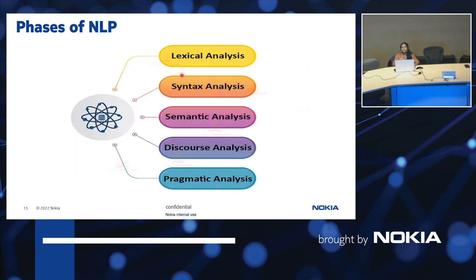There are five phases of NLP. The first is lexical analysis — the collection of words and phrases in a language is referred to as lexical. It divides text into paragraphs, sentences, and words. The next is syntax analysis: just as software programs have syntax rules to follow, human language has grammar. This analysis checks the grammatical structure of sentences or words.